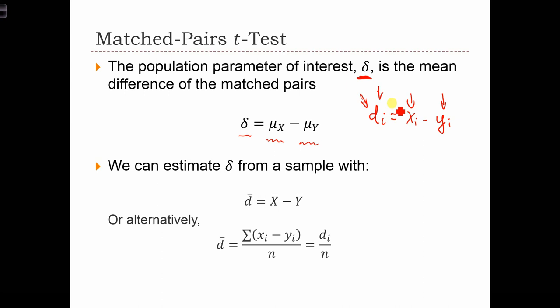So the mean of di we're going to call d bar. And that's exactly what we have over here. D bar is equal to the mean x minus the mean y from the sample.